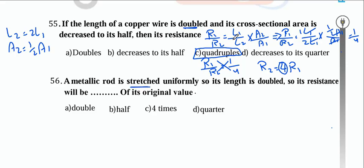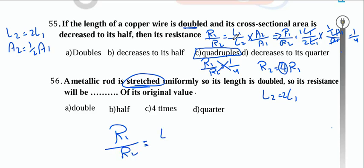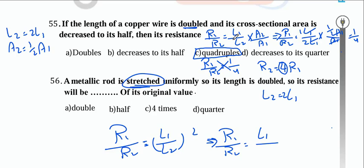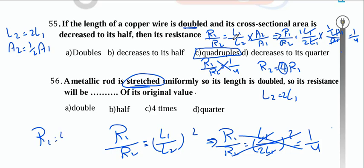A stretched rod with L2 = 2·L1: using R1/R2 = (L1/L2)² for stretched wire, R1/R2 = (L1/2L1)² = 1/4, so R2 = 4·R1 — resistance quadruples again. For problem 57, two wires of same length with R1 = R2, one copper and one iron: the ratio of radii depends on root of resistivities: r_iron/r_copper = √(ρ_iron/ρ_copper).